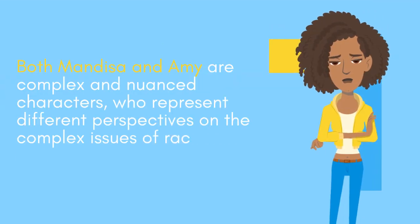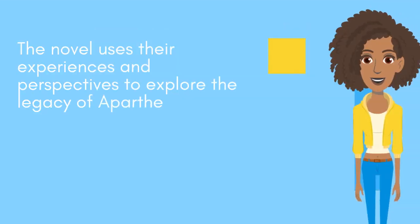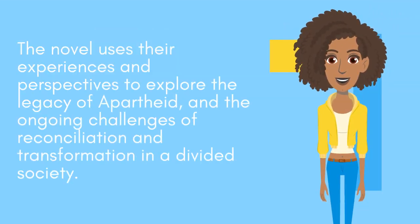Both Mandisa and Amy are complex and nuanced characters, who represent different perspectives on the complex issues of race and social justice in South Africa. The novel uses their experiences and perspectives to explore the legacy of apartheid, and the ongoing challenges of reconciliation and transformation in a divided society.